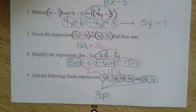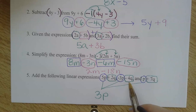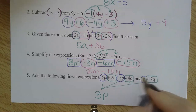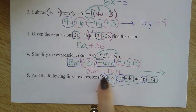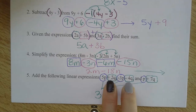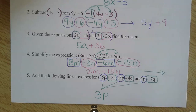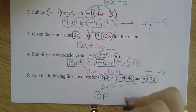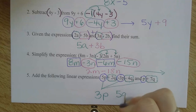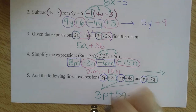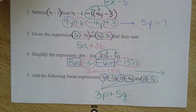That gives me 3p. And then my q's: 2 minus 4. I just like working left to right, so I'm reading across my q's. 2 minus 4 is negative 2, plus 7. Negative 2 plus 7 is 5q. If it's positive, put a plus sign.